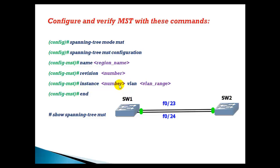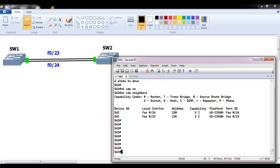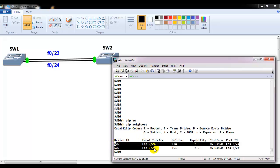To implement the lab, I'm keeping it simple with only two switches connected via port number 23 and port number 24. We'll use the 'show spanning-tree MST' command for verification. I am on the command line of my switches.